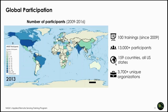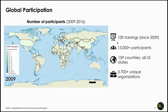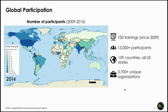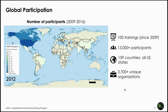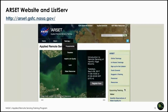Between 2009 and 2016, ARSET provided more than 100 trainings to more than 13,000 participants, reaching 159 countries and all U.S. states, with over 3,700 unique organizations participating. The ARSET website lists all online and in-person trainings. You can join the ARSET listserv to receive information about upcoming trainings and other activities.